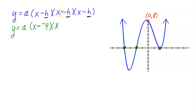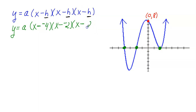Bring down your X and minus sign. The next X intercept is negative 2, so I'll replace this H with negative 2. Then bring down the last X and minus. The furthest X intercept to the right is positive 2, so I replace this last H with positive 2. You don't need to show the positive sign, but it's positive 2.